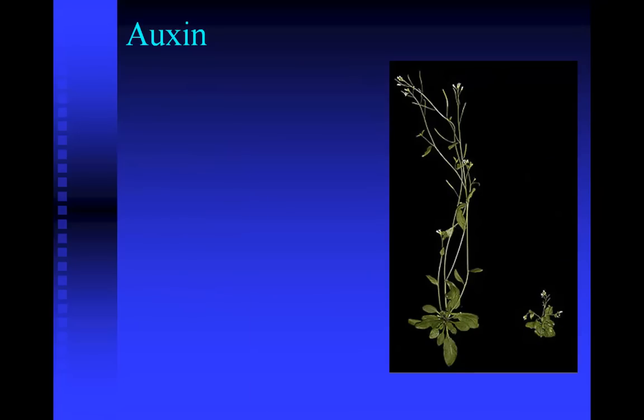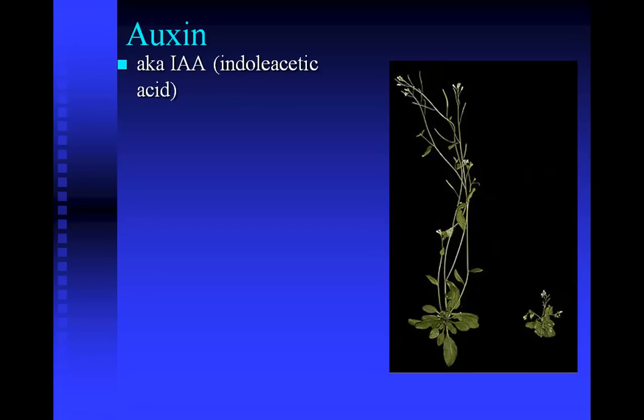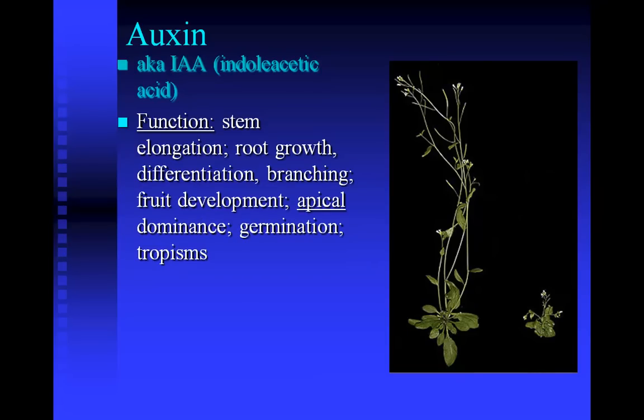Let's talk about auxin. The plant on the left in this slide has been treated with extra auxin, and the plant on the right has been left alone. Auxin is also known as IAA, or indoleacetic acid, and there are a number of different forms — IAA1, IAA2, etc. Auxin is known primarily for stimulating apical dominance, or primary growth, meaning it causes a plant to grow taller before it starts to branch out. This helps the plant's survival because the taller a plant is, the more sunlight it can get.